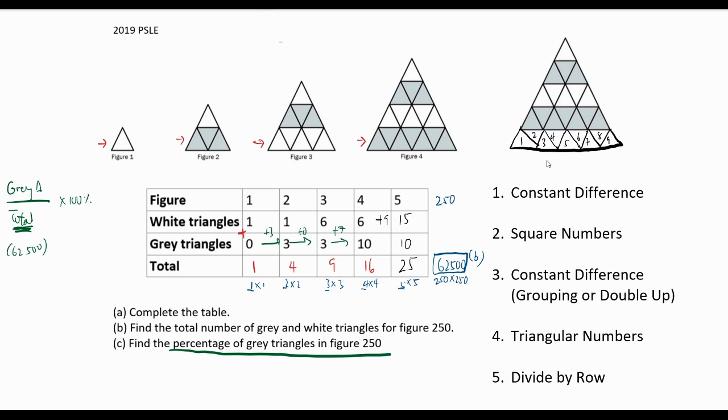Let's try and find a pattern for grey triangles. It's not constant difference, not square numbers, not constant difference grouping or double up, but it is triangular numbers. So we can write down the formula and the value of n.